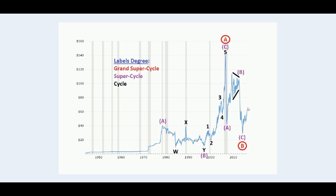What we will do on the charts is analyze the current rise, which is showing a very complex structure that could develop as a WXY or as an ABC within a leading diagonal for what's to come. So let's start analyzing the charts, do our Fibonacci measurements, and start labeling.